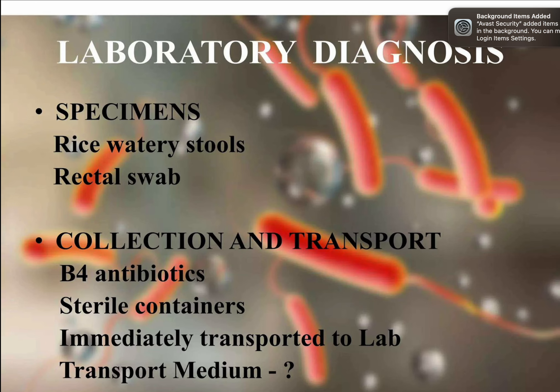For lab diagnosis, the specimen of choice for diagnosing cholera is rice watery stool or a rectal swab. Selective media such as TCBS and Monsur's GTTA help in isolating the bacterium. Colony morphology on TCBS appears yellow, while on MacConkey agar colonies start pale and turn red after extended incubation. Gram staining of isolated colonies shows comma-shaped gram-negative rods.